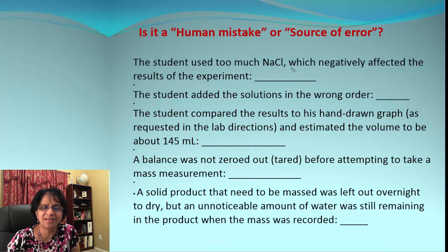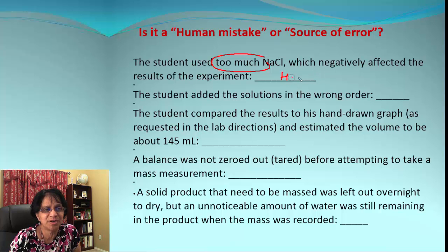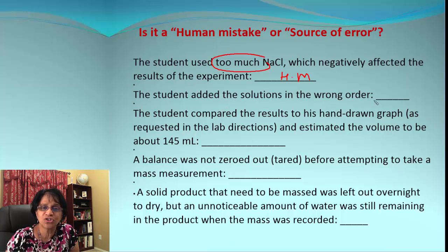Moving on: a student used too much NaCl, which negatively affected the results of the experiment. Too much — the student made a human mistake because they did not take care while adding the chemicals. Next: a student added the solutions in the wrong order — again, not following the procedure — so it will be a human mistake.